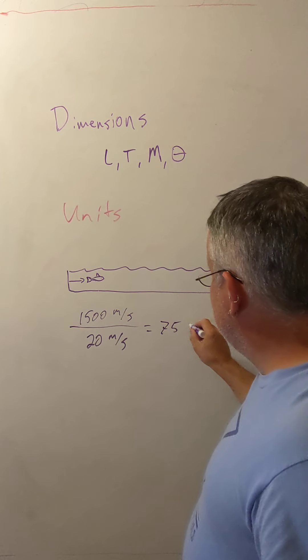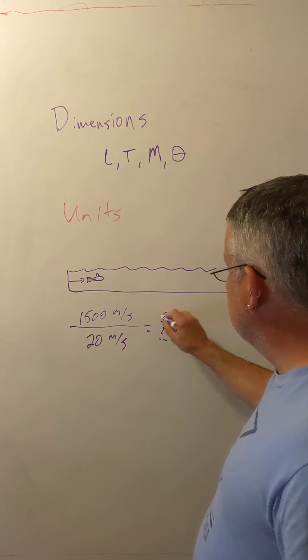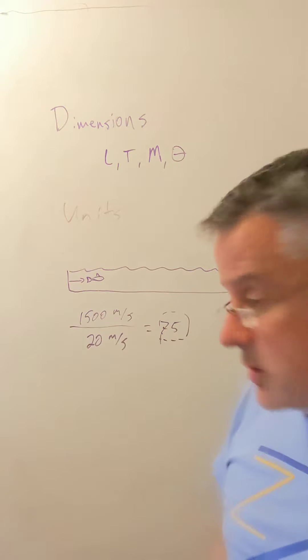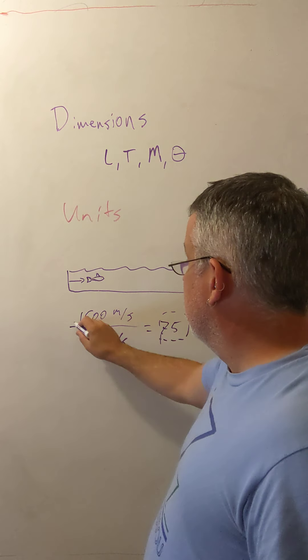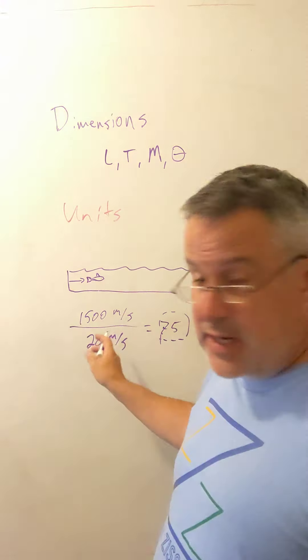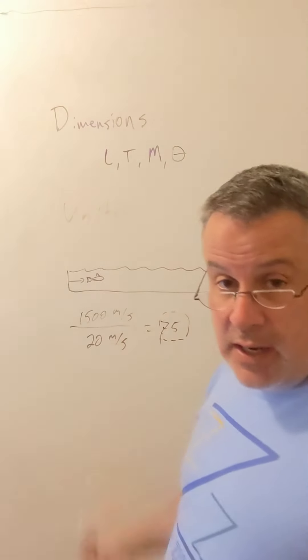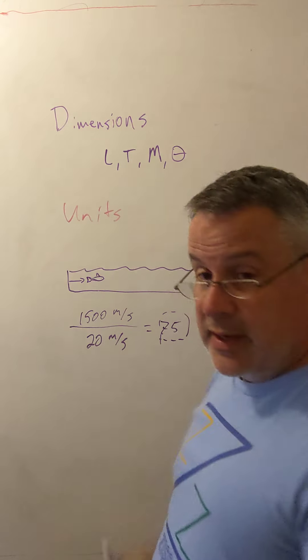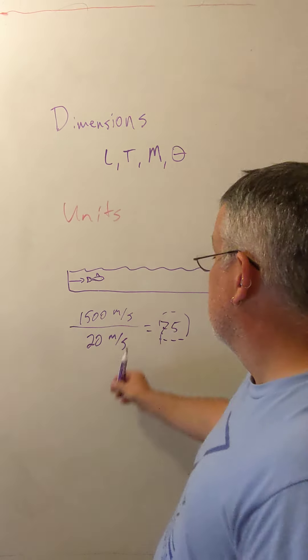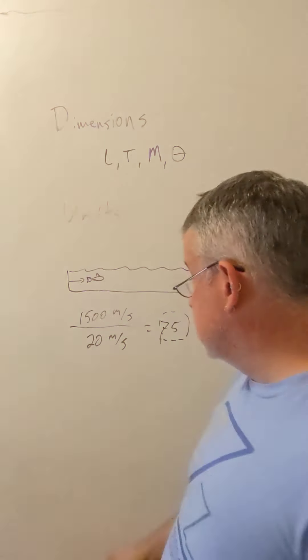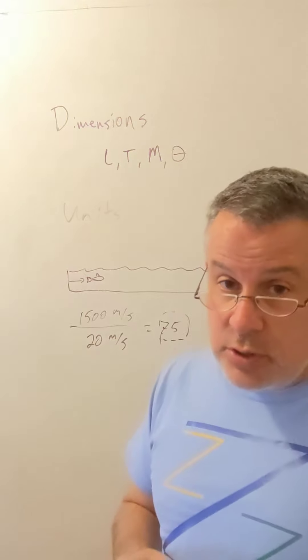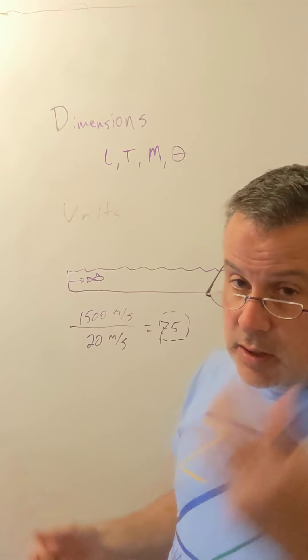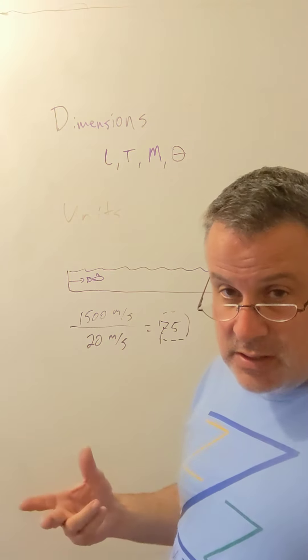Now notice that 75 has no dimensions, whereas 1500 meters per second has dimensions of length per time or the same as the dimensions of velocity. 20 meters per second has the length per time, the same dimensions of velocity. The ratio of these two different velocity speed of a tuna, speed of sound is dimensionless.